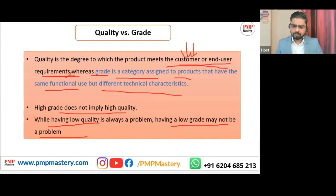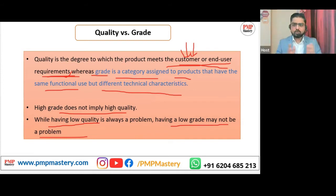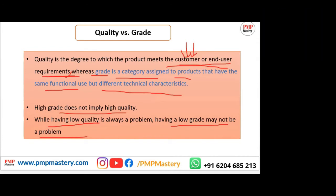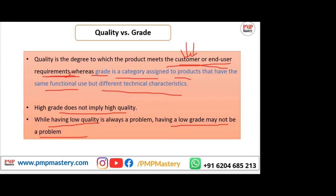Just to make it simple — take the example of an Apple phone and a Vivo phone. Apple phone quality is good, but the features — the grade — may not be as good as Vivo. Vivo has many sensors and other features, but Vivo quality is less. So if a customer wants good quality, they prefer Apple over Vivo. More features means higher grade, not necessarily higher quality.